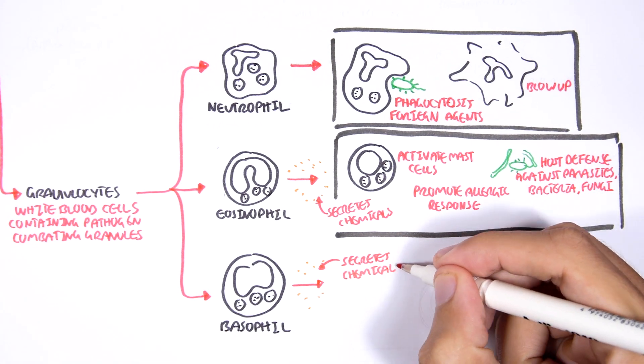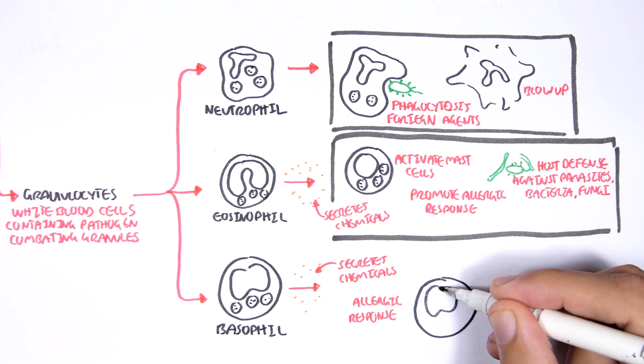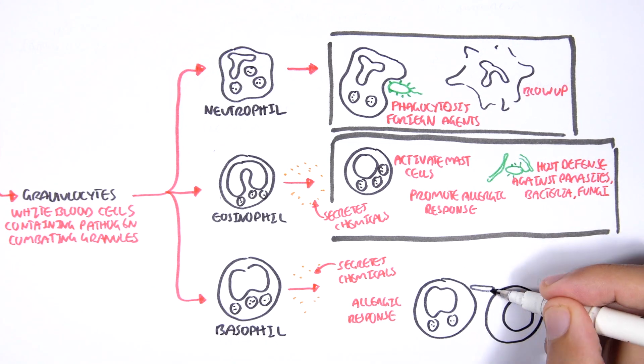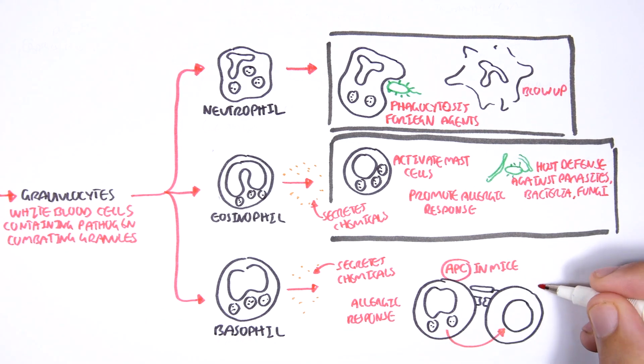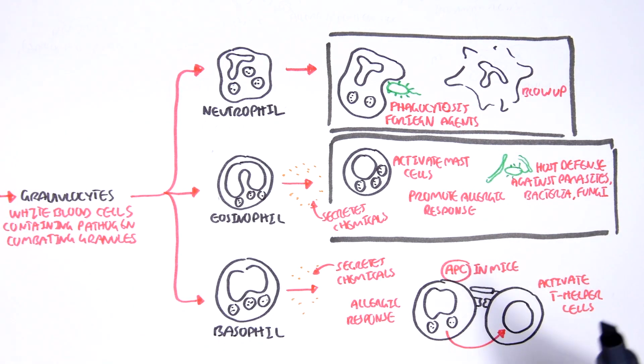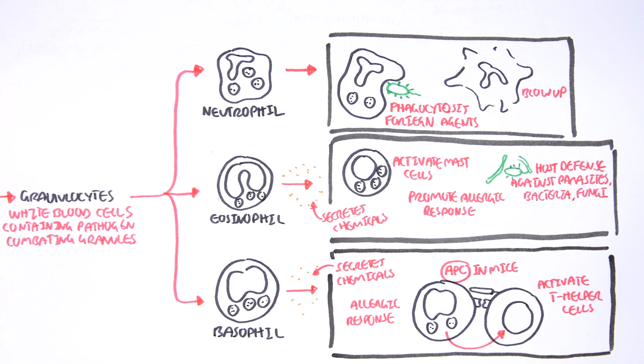Then you have the basophils. Now the basophils also secrete chemicals which promote the allergic response. In mice, it's been found that basophils are also antigen-presenting cells, which are cells that can activate T cells. Okay, so those are the three granulocytes.